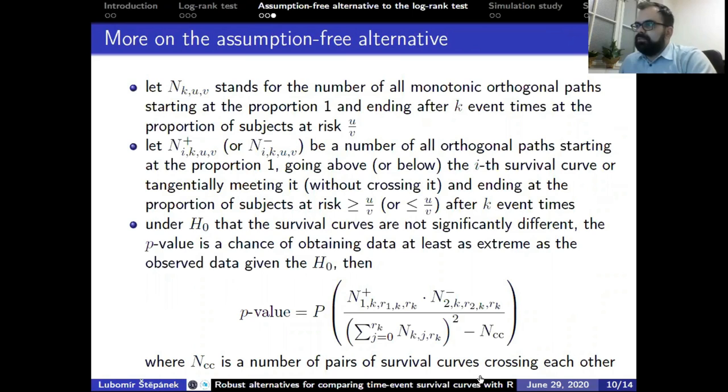Under the null hypothesis, we assume the survival curves are not significantly different. The p-value is the chance of obtaining data at least as extreme as the observed data. Under the null hypothesis, we calculate the p-value as the probability of getting pairs of survival curves such that the first curve is above the top original one in the plot, and the second curve is below the bottom original one. This is more formally described in the introduced equations.